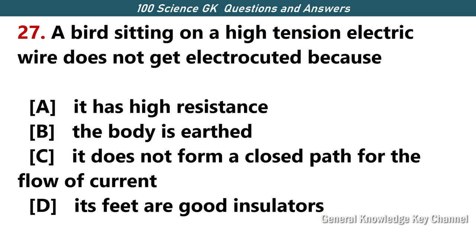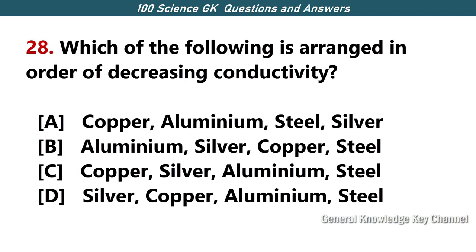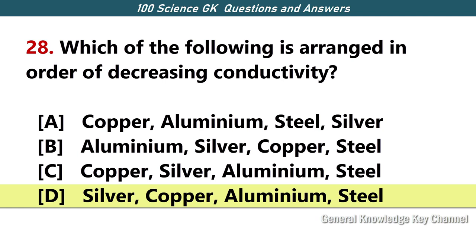A bird sitting on a high tension electric wire does not get electrocuted because — Answer C — it does not form a closed path for the flow of current. Which one of the following is arranged in order of decreasing conductivity? Answer D — silver, copper, aluminum, steel.